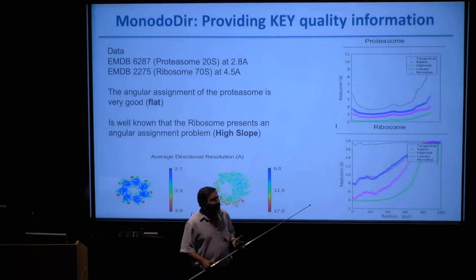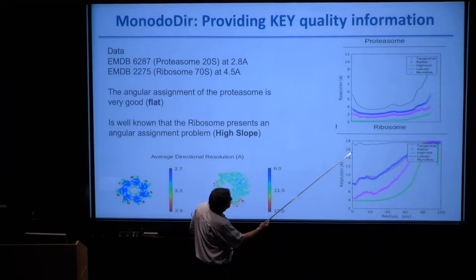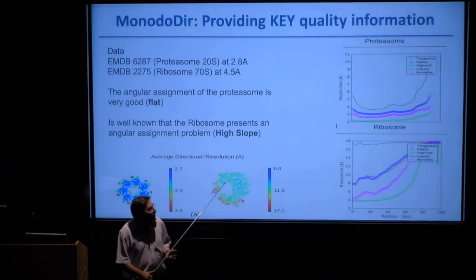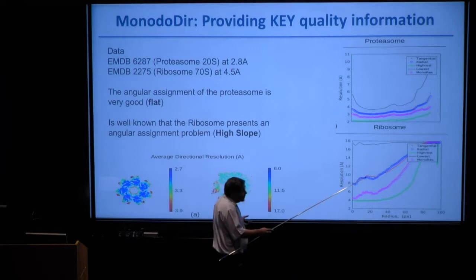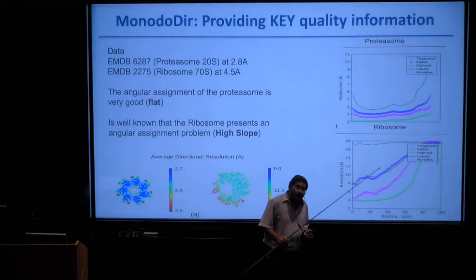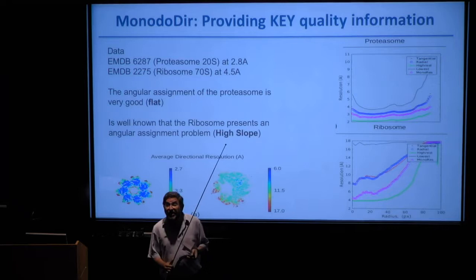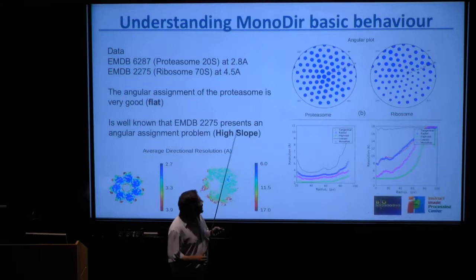As an opposite case, we used a specific ribosome previously studied by Chris Russo in another paper. The conclusion was the same that he reached — that this map has more angular errors than the other one. The difference is that we, again, didn't have the images or the angular assignment of the images, only the map.